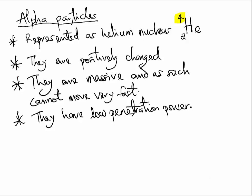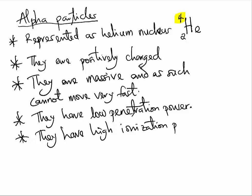Alpha particles can easily be stopped by a thin piece of paper. However, if they collide with our skin, they can knock off electrons from our outer skin layer, leading eventually to skin cancer. That is called ionization power — they have high ionization power.